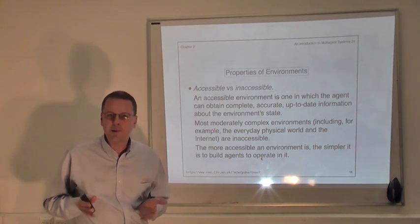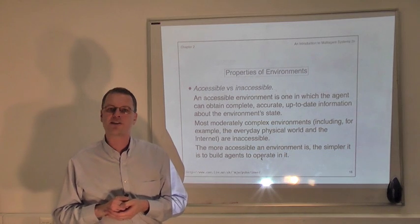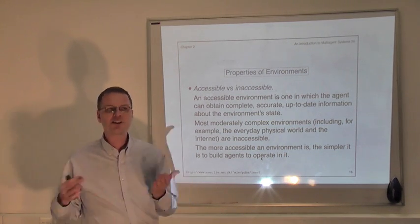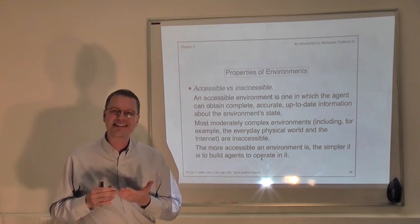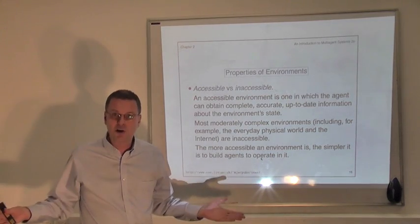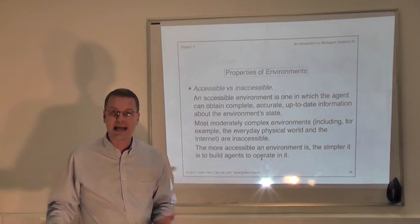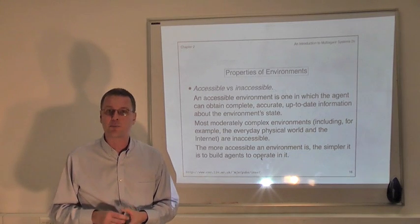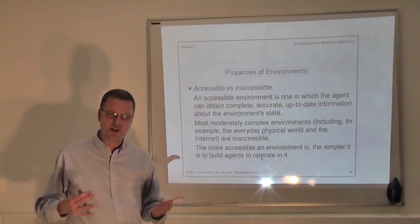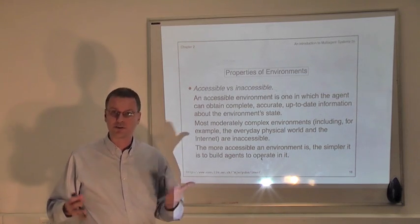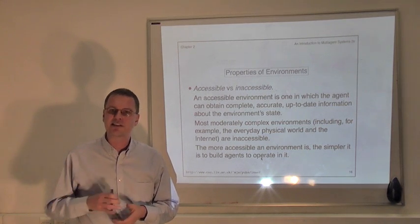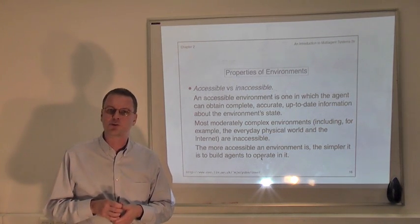We've seen a couple of examples of environments so far, so let's just remind ourselves what those are. Firstly, we can think of agents as being situated in the physical world — the world we all inhabit, the physical world that you and I operate in. So agents, autonomous agents that inhabit the physical world, are essentially robots. They're directly doing things to the physical world.